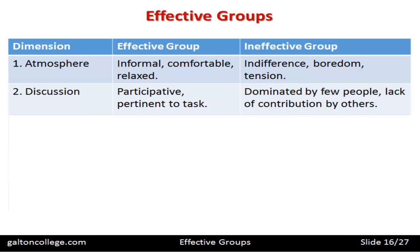For the dimension of discussion, an effective group would be participative and pertinent to the task — all members join in discussions, debate the issue, talk about why they were formed as a group and what they're trying to achieve. The ineffective group would be dominated by a few people with a lack of contribution by others; a few people do all the talking while the rest sit around and agree, or don't participate at all.